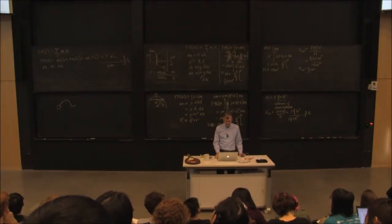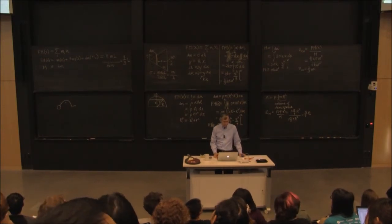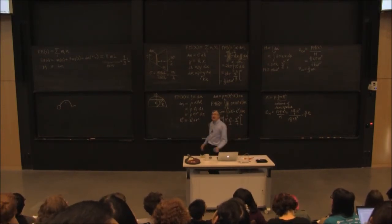We'll talk about that a little bit more next time. So for today, the center of mass is a special point on an object because it moves particularly simply.